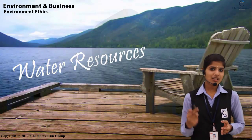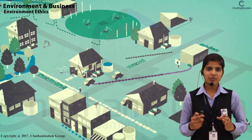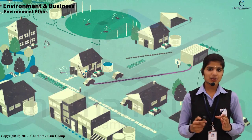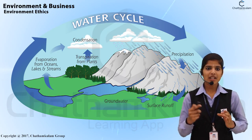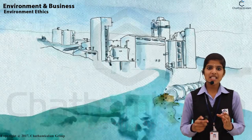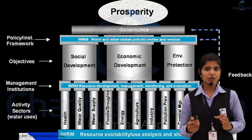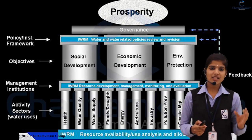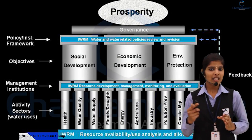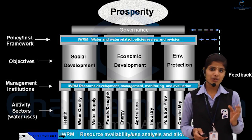Next one is water resources management. Water resources management is the activity of planning, developing and distributing and managing the optimum use of water resources. It is the subset of water cycle management. Integrated water resources management is the process which promotes the coordinated development and management of water and land-related resources in order to maximize economic and social welfare in an equitable manner without compromising the sustainability of its ecosystem.